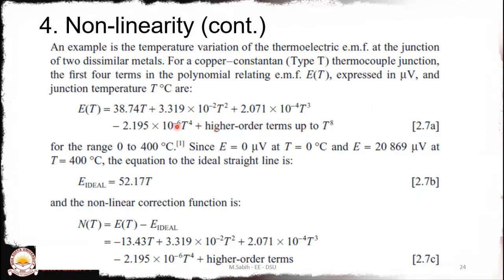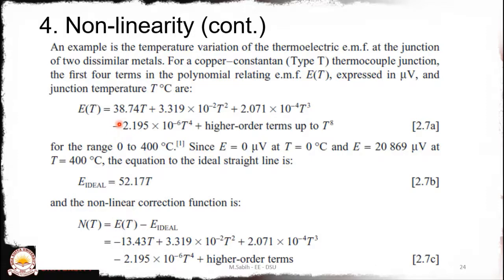From this nonlinear model we can derive the ideal linear equation. Equation 2.7a gives the full polynomial, and your task is to derive the linear equation 2.7b, which is 52.17T. Once we have both the linear model (2.7b) and the actual model (2.7a), we can find the nonlinearity equation n(T) by subtracting the ideal linear output from the actual output — that is, equation 2.7a minus 2.7b.